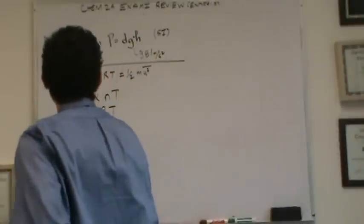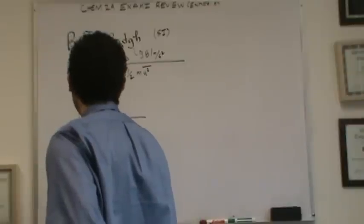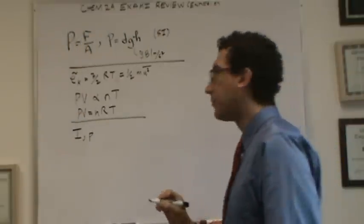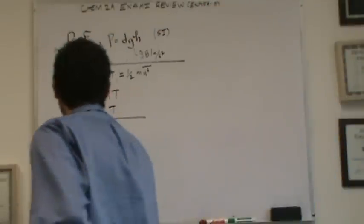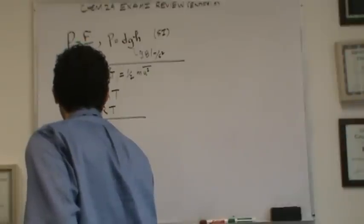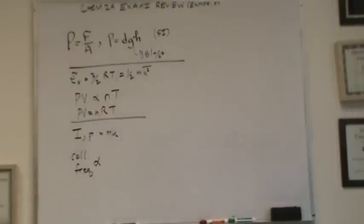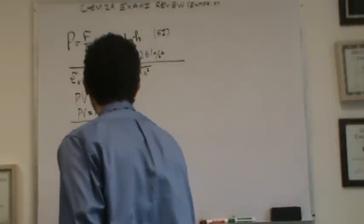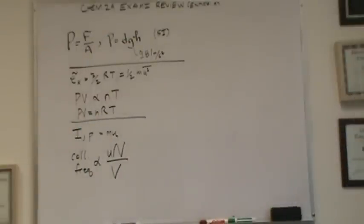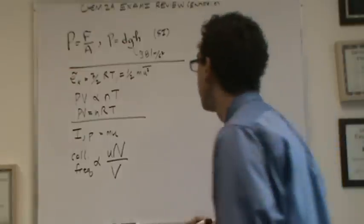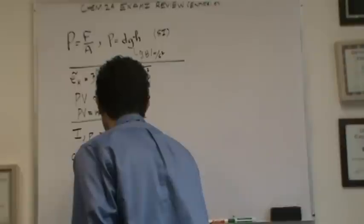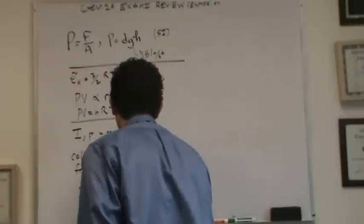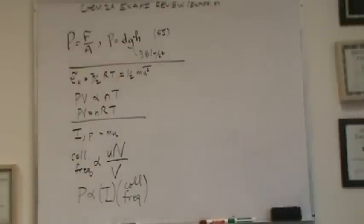Also, a couple equations that came out of here. I, which is the momentum or the impulse, sometimes in the next chapter, there's symbolized P for momentum. That equals mass times velocity. And then, collision frequency. Collision frequency is proportional to velocity times capital N over V. Capital N is the number of particles. V is the volume. So when we put it together with pressure, said, well, pressure is proportional to the impulse, or momentum, capital I, times the collision frequency. And that's mostly conceptual. These formulas you're not going to use mathematically in this chapter. They were just conceptual things that we needed to derive the ideal gas law.